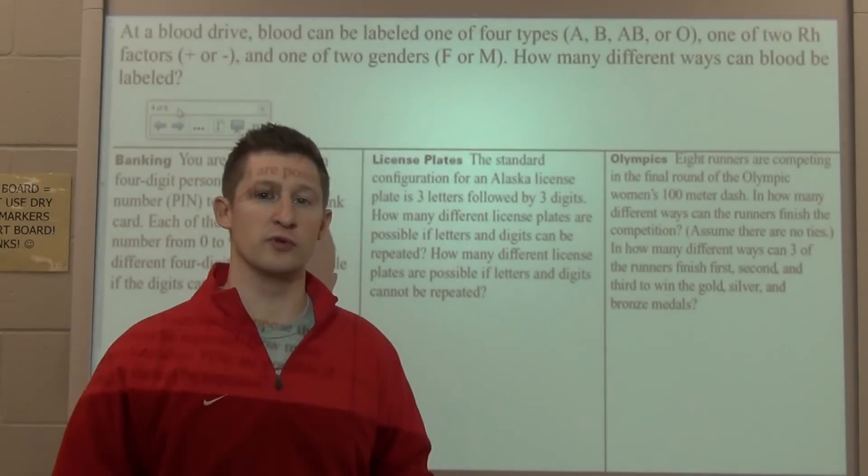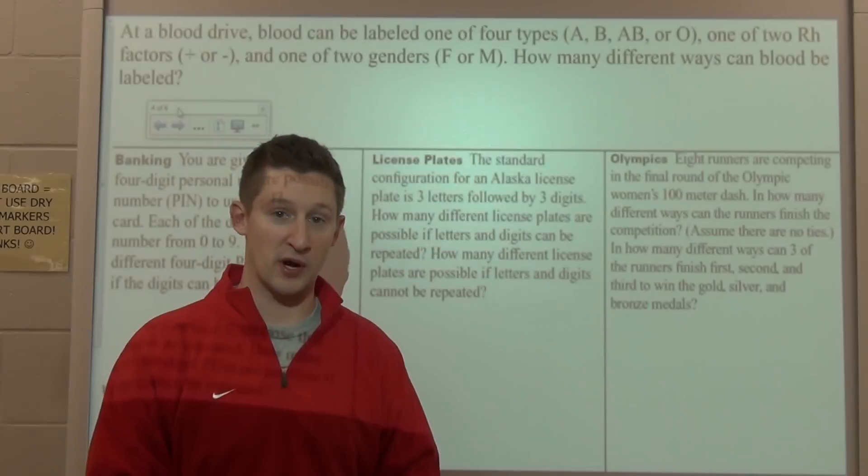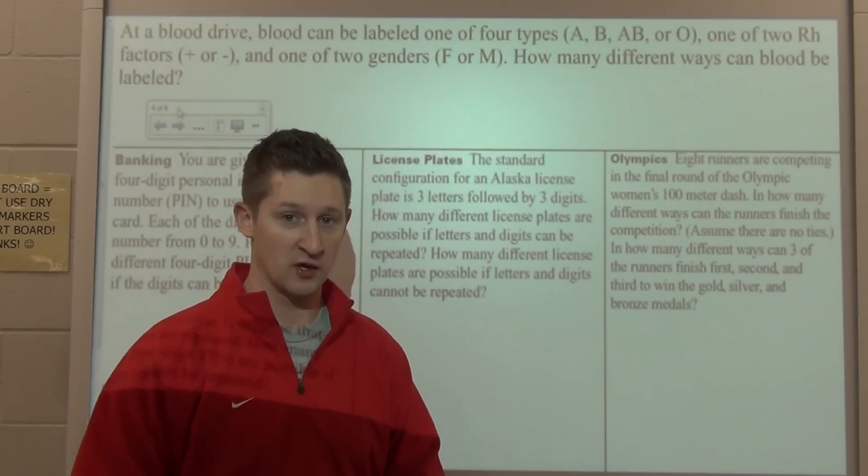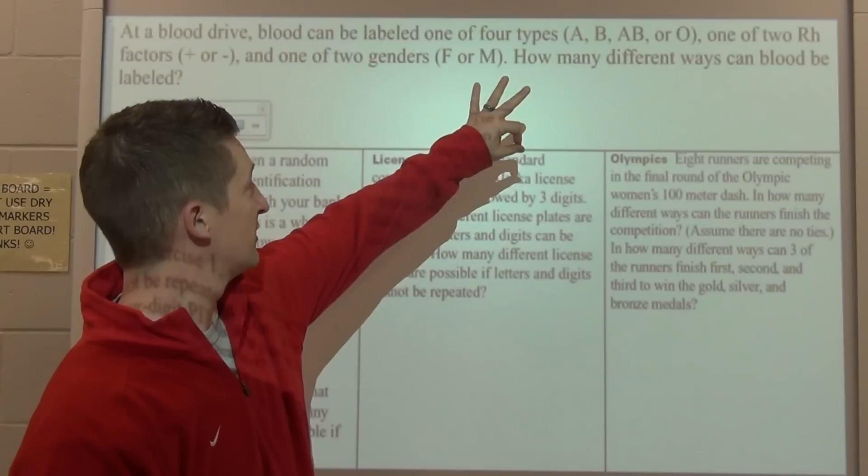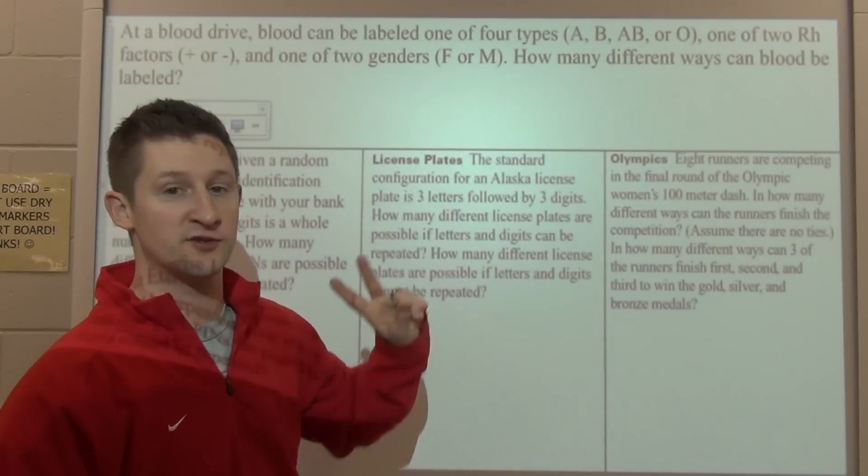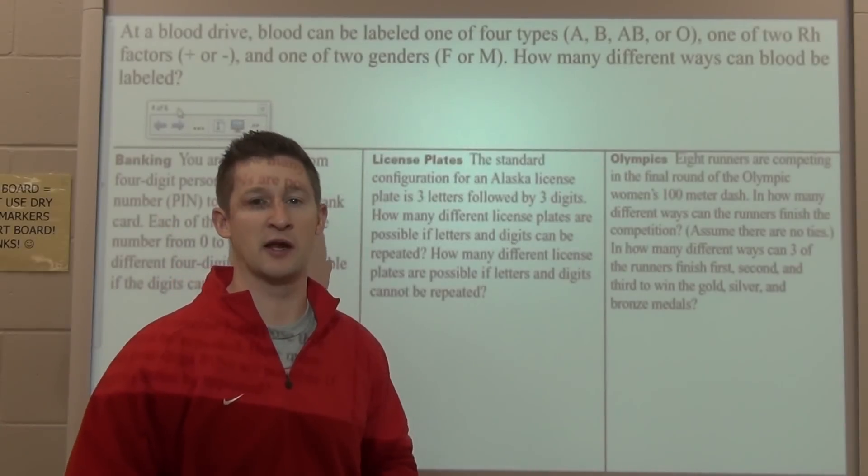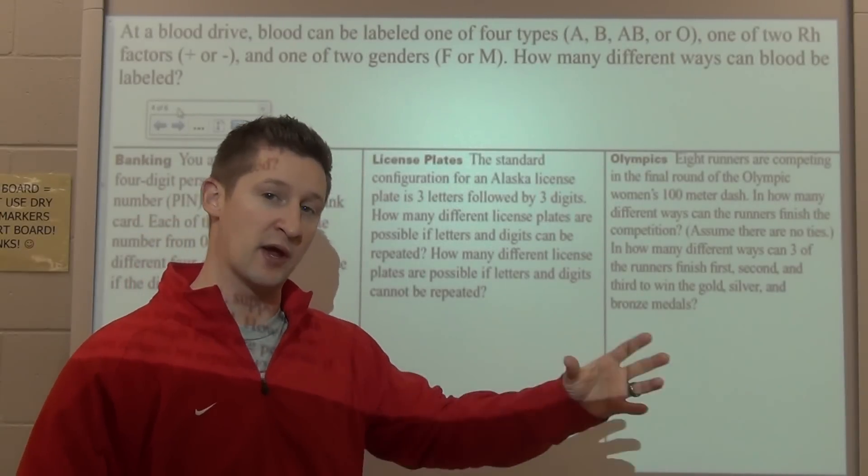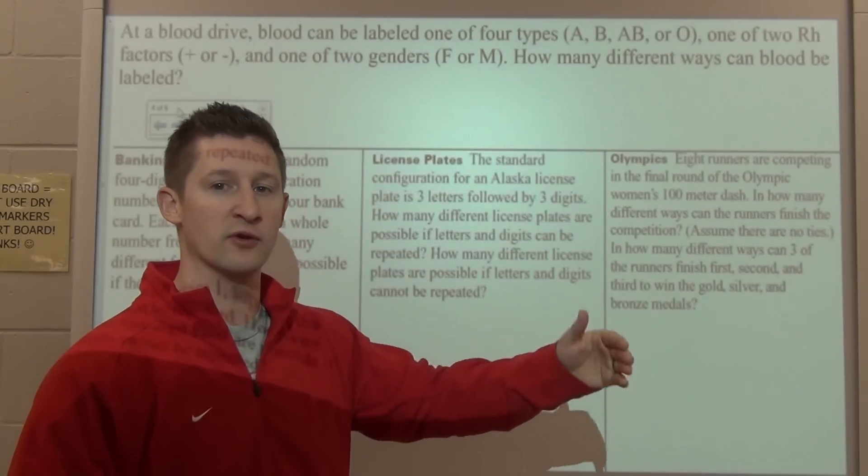Well, this is similar to the example we had with the different kinds of bread and meat, and also the different uniform combinations that the Pacer football team might wear, where these three factors here - the type, the RH factor, and the gender - are three independent events. That being the case, to find the total number of combinations we might come up with, we're going to multiply those things together.